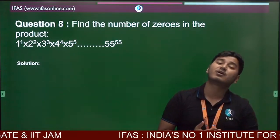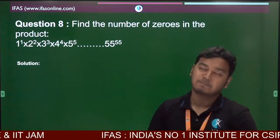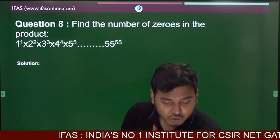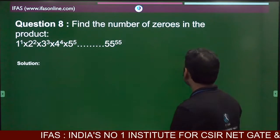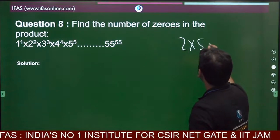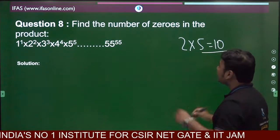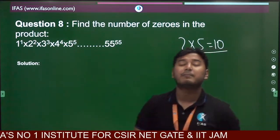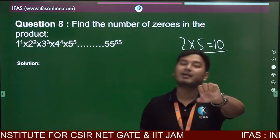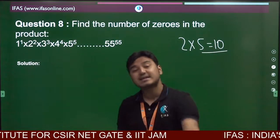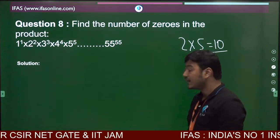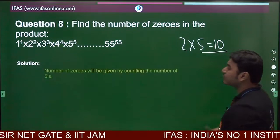To find the number of zeros, we need to find pairs of 2 and 5, since 2 multiplied by 5 gives 10. As we know, in any product, the number of 5s is always less than the number of 2s. So the number of zeros equals the number of 5s in the entire product.